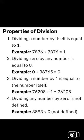Properties of division: first, dividing a number by itself equals one. Second, dividing zero by any number equals zero. Third, dividing a number by one equals the number itself — for example, seventy-six thousand two hundred eight divided by one is seventy-six thousand two hundred eight.